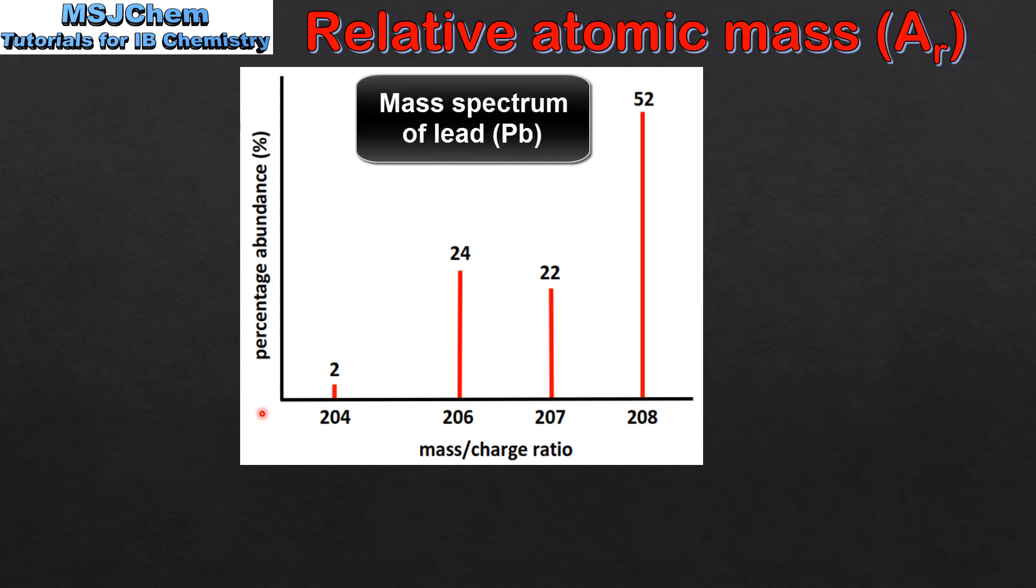A mass spectrum has the percentage abundance on the y-axis and the mass to charge ratio on the x-axis.